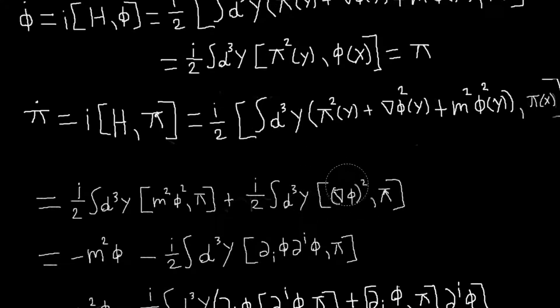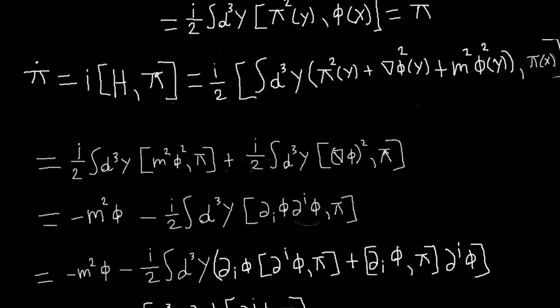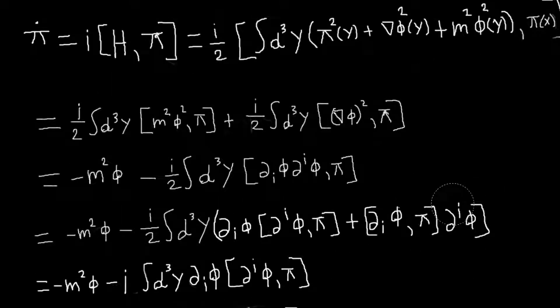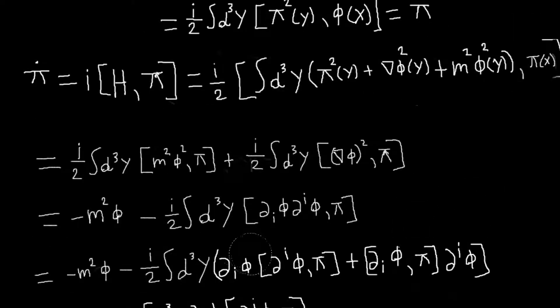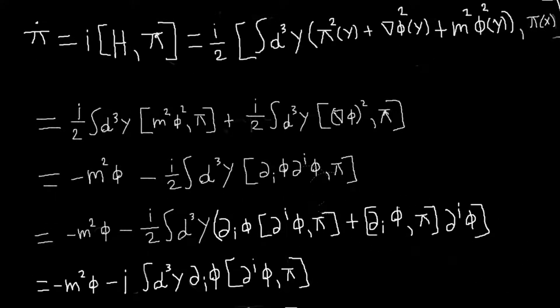So I can write this gradient of phi squared term as minus di phi di phi, and then you can use the normal, so the commutator of a, b, c is a, b, c plus a, c, b. This kind of commutation relation. So you can do that, and then in these commutators,